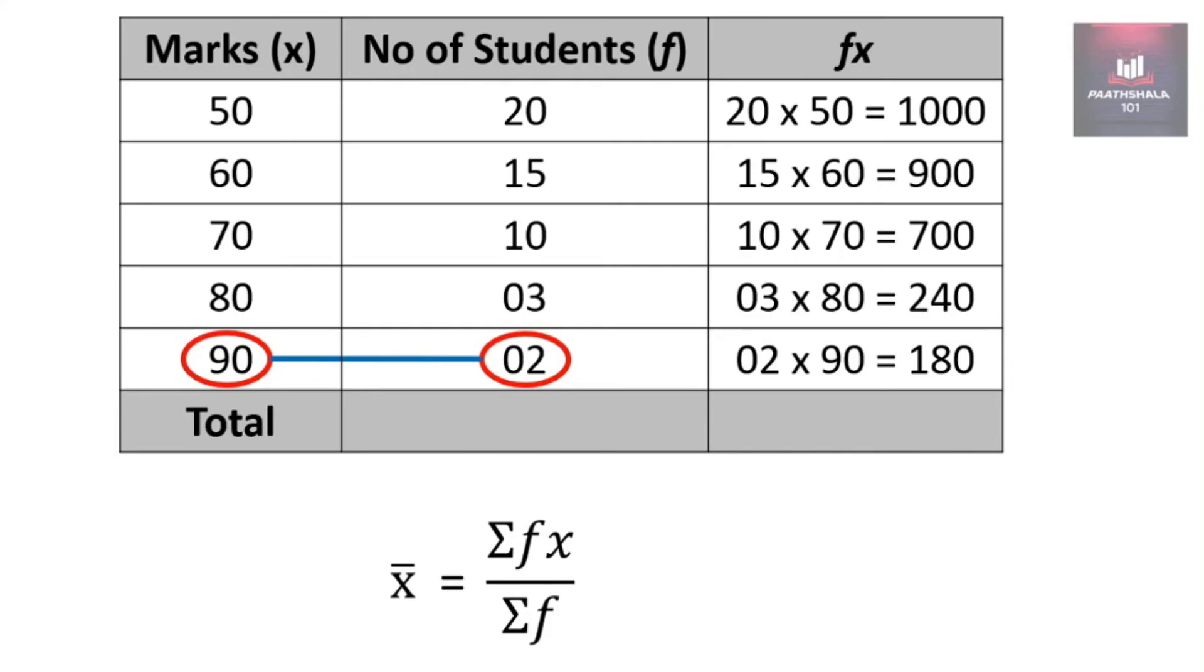Now the total of frequency comes to 50 and the total of fx comes to 3020. If we substitute this in the formula, it will become 3020 divided by 50, which on simplification comes to 60.4.